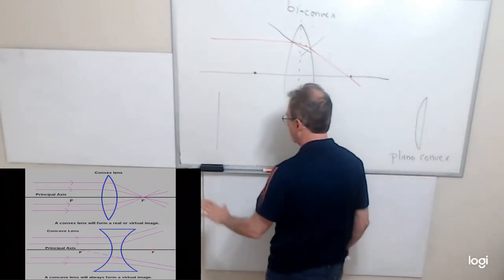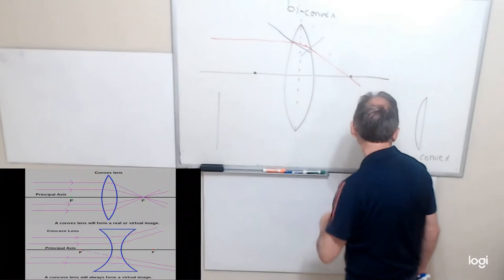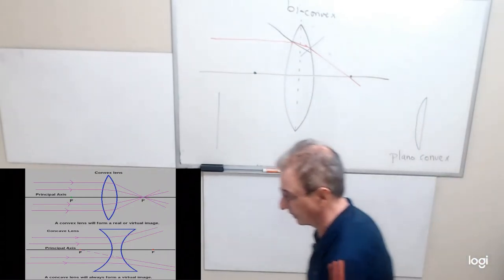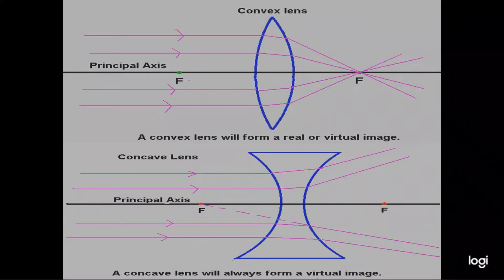A convex lens can form a real or virtual image, while a concave lens will always form a virtual image because the rays always diverge. Now, the fact that a spherical mirror focuses light to a point is only true for rays close to the principal axis — this involves a small angle approximation. If you look at a large object in a small mirror, you'll likely see the image distorted because of the spherical shape. We call that spherical aberration.